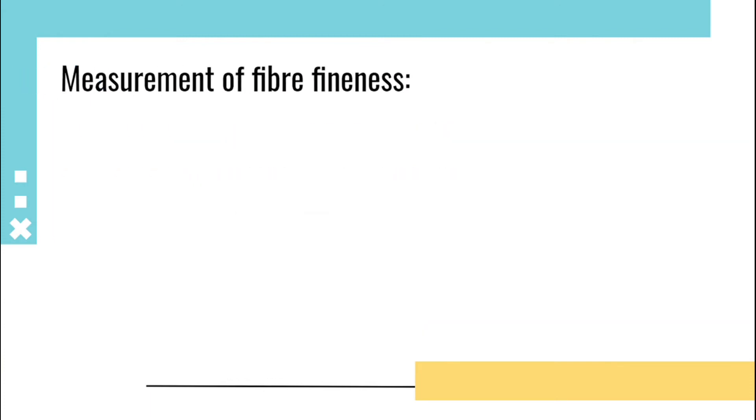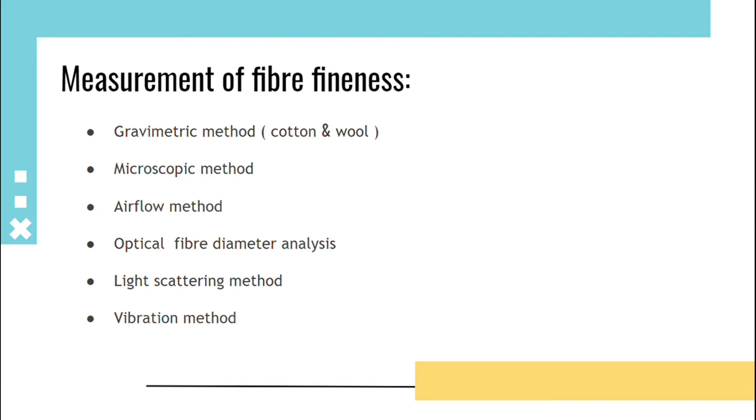Measurement of fineness: gravimetric method for cotton and wool, microscopic method, airflow method, optical fiber diameter analysis, light scattering method, and vibration method. Except vibration method, all these methods are used for finding the fineness of bulk. Vibration method is used for finding the fineness of individual fiber.